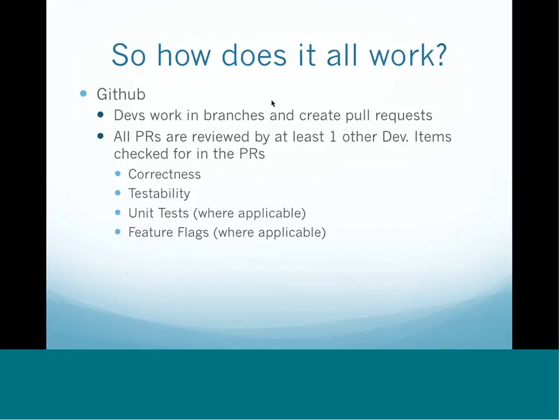We also check for testability — is what you're building something you can easily test? That's important because we want devs to write as many unit tests as they can to check their stuff in isolation. We also check for feature flags. One of the things we like to do to allow us to move quickly is add feature flags to our application. This lets us put in code that's turned off, make sure the deploy doesn't break anything, and then turn it on to a subset of users so we can test it live against production.